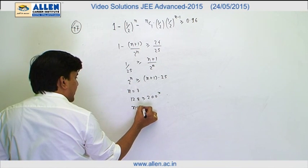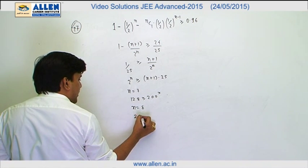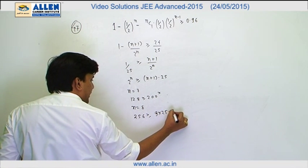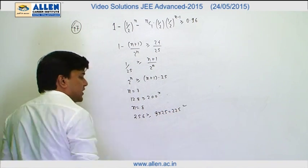And for n equal to 8, we can see this is 2 raised to the power 8 that is 256, and this is 9 into 25 that is 225. We can see this relation is correct.